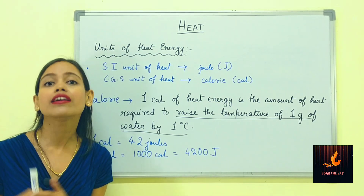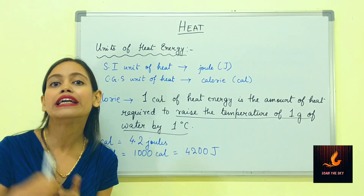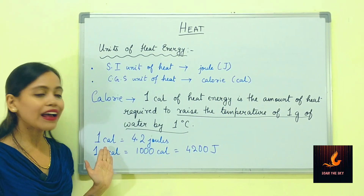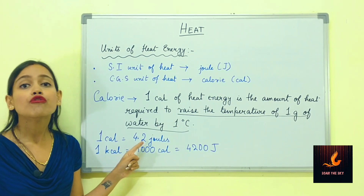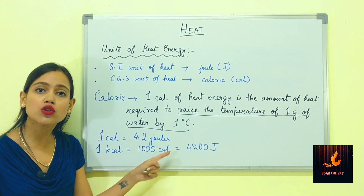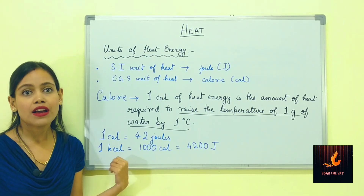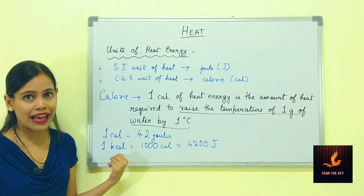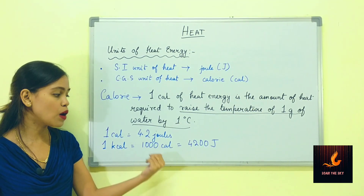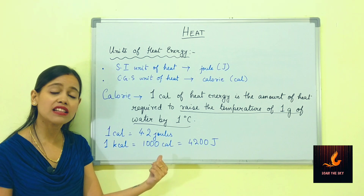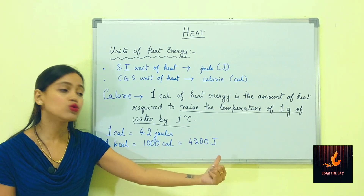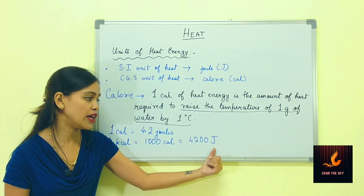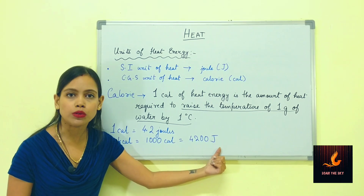How are calorie and joule interrelated? One calorie is equal to 4.2 joules. One kilocalorie, written as kcal, is 1000 calories, and when converted into joules it becomes 4200 joules.